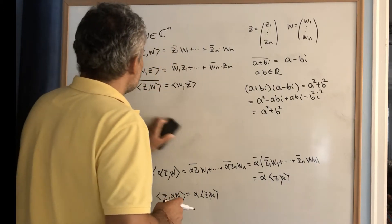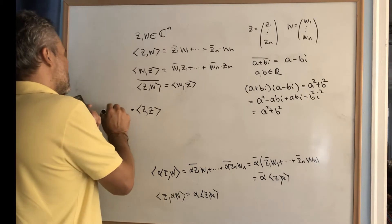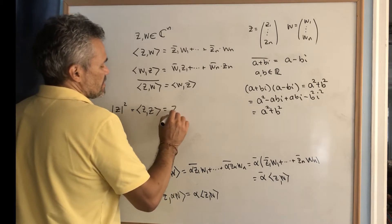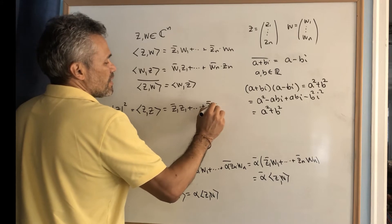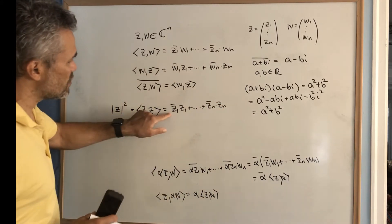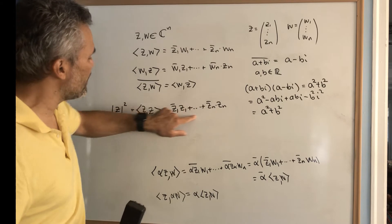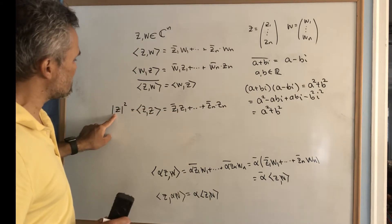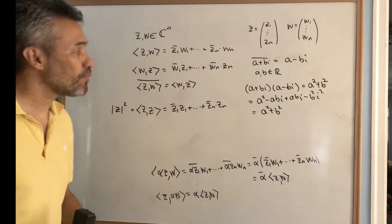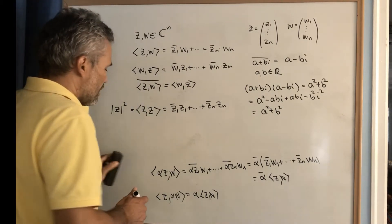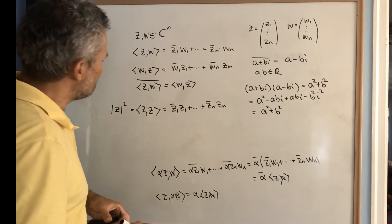Another property: if we compute the inner product of c with itself, we call this the norm of c squared. This equals c₁-conjugate times c₁ plus ... plus cₙ-conjugate times cₙ. Each term is the sum of squares of two real numbers, so the whole expression is zero only if c is the zero vector; otherwise it is a real positive number.